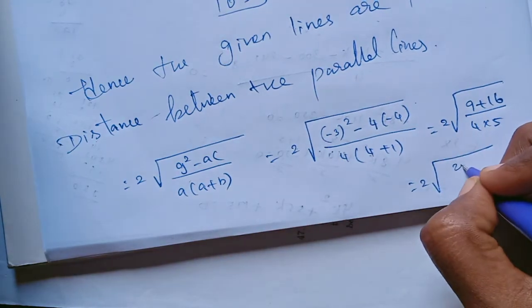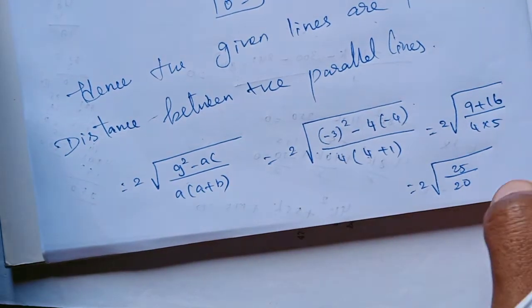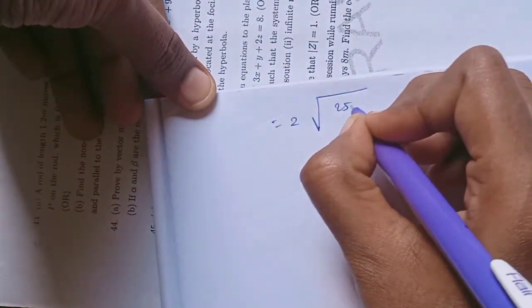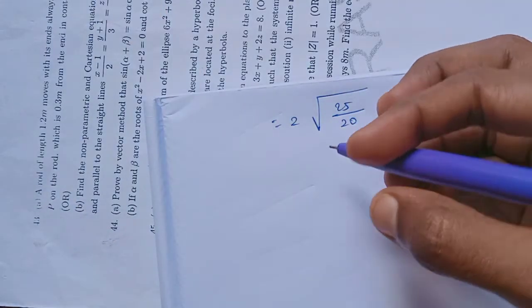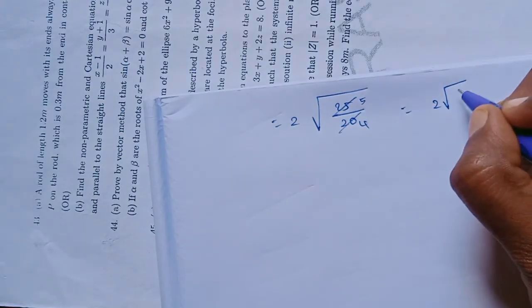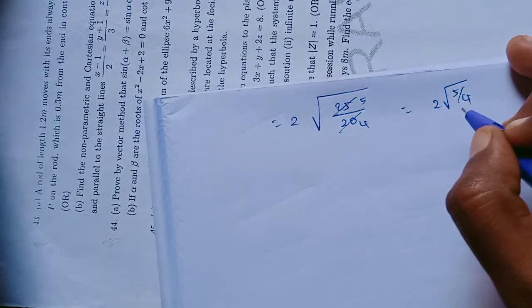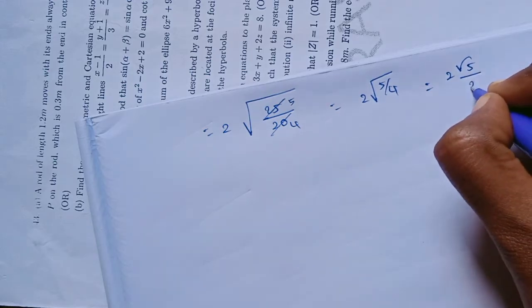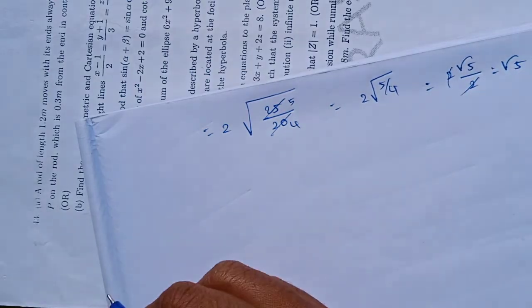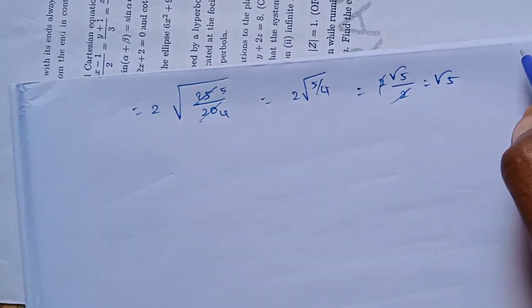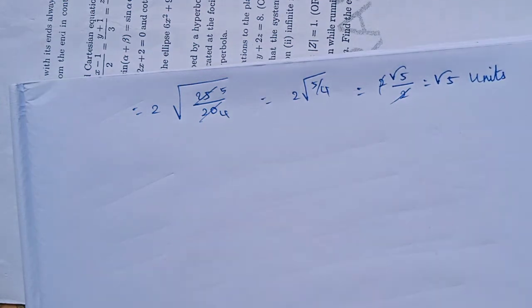Continuing the calculation: 2 × √25 / (4√5) = 2 × 5 / (4√5). Simplifying: 10 / (4√5). Cancelling, we get √5 / 2. Therefore, the distance between the parallel lines is √5 units.